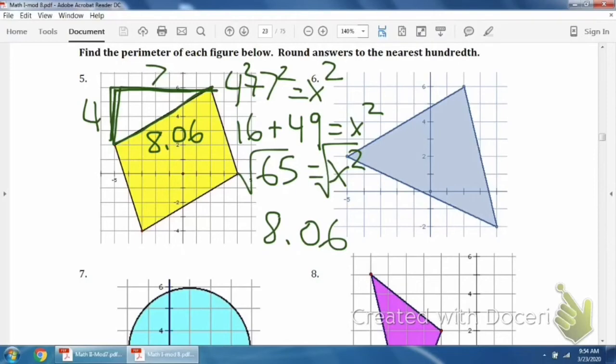All right, now you're probably thinking the one on the bottom is the same, so let's check it. It looks like it goes up one, two, three, four, and then over one, two, three, four, five, six, seven.